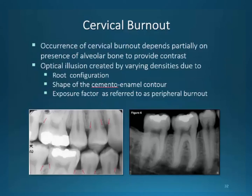Let's take a closer look at cervical burnout. Students always have difficulty with this condition and want to view it as rampant decay. The alveolar bone provides contrast to these areas and sometimes makes them appear worse than they really are. The tooth structure does exist, but because the density of this area is weak, radiation passes through these areas giving them an image of void of tooth structure — it is strictly an optical illusion. There is no decay present. The shape of the tooth's contour may play a role in this condition as it does on the radiographed image.